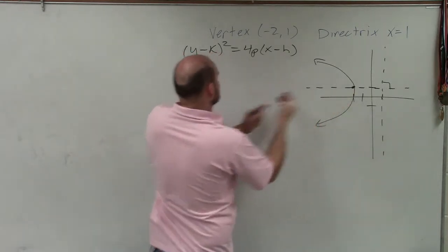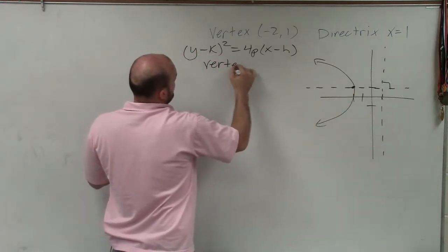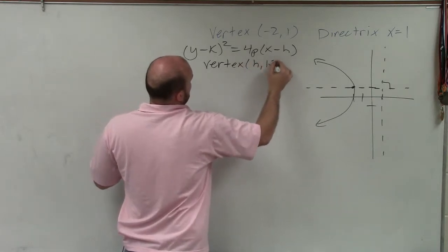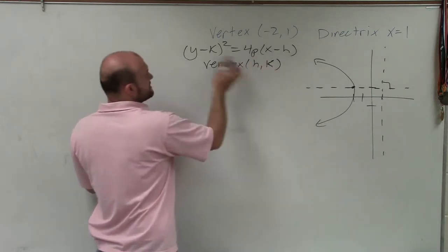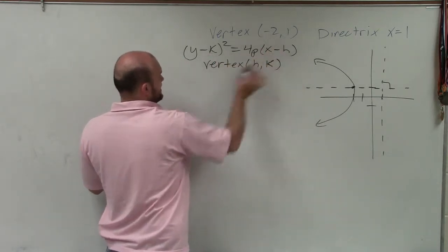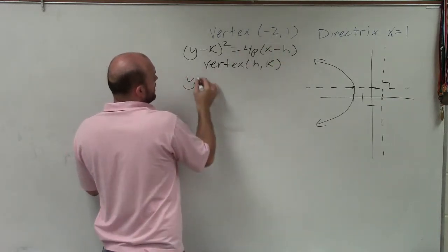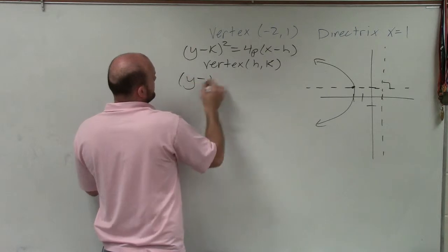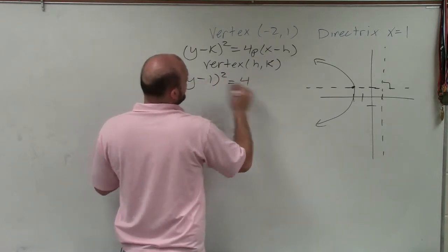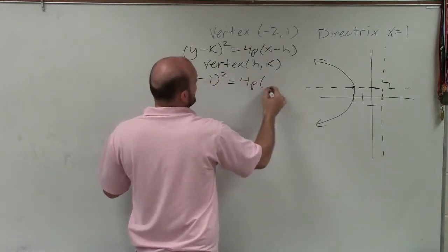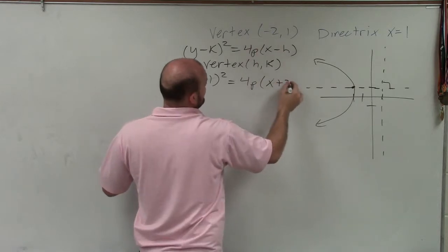Now, our vertex is in the form of h comma k. Notice that this is opposite of k, opposite of h. So by plugging that information, I have y, opposite of 1, which would be negative 1, equals 4 times p times x, opposite of negative 2, which would be plus 2.